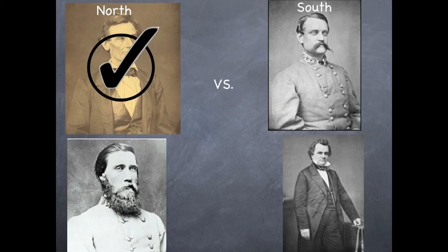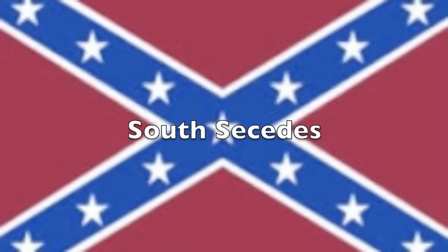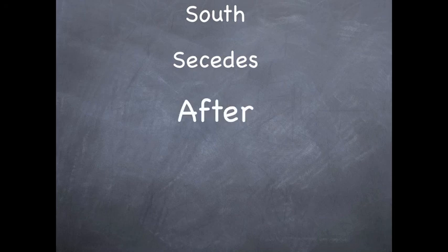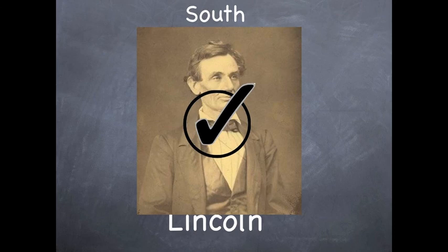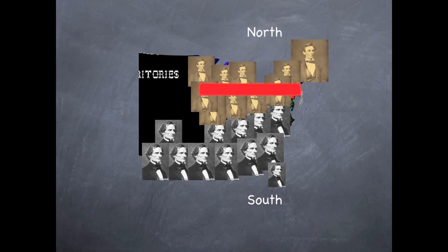Abraham won the election with Breckinridge coming in second. This caused the South to secede because they did not like Abraham Lincoln. The South seceded after the election of Lincoln, and Jefferson Davis became the president of the South.